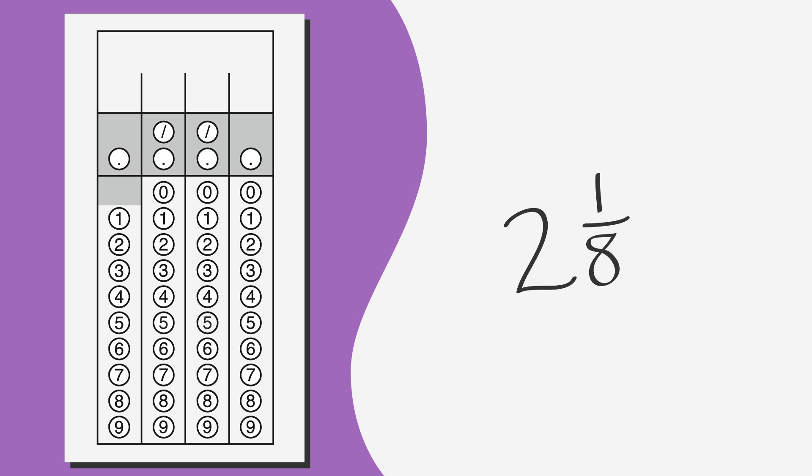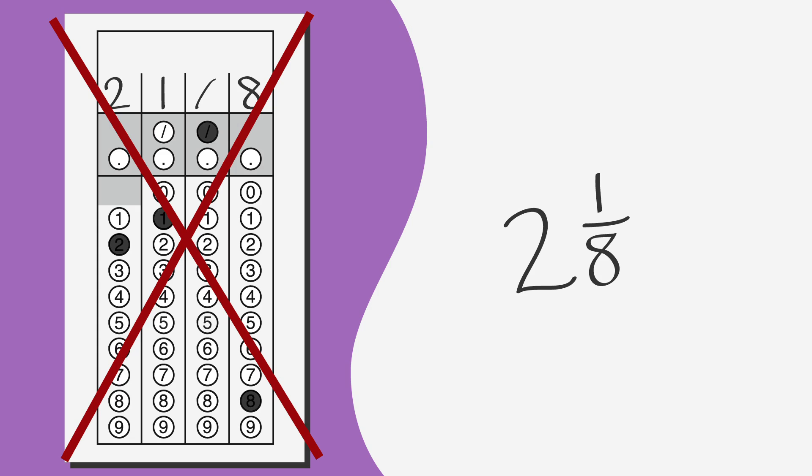Also, never enter a mixed number on the answer sheet. Notice how 2 and 1 eighth, when entered on the answer sheet, looks like 21 eighths, which is incorrect. In this case, you represent the fraction not as a mixed number, but as an improper fraction.